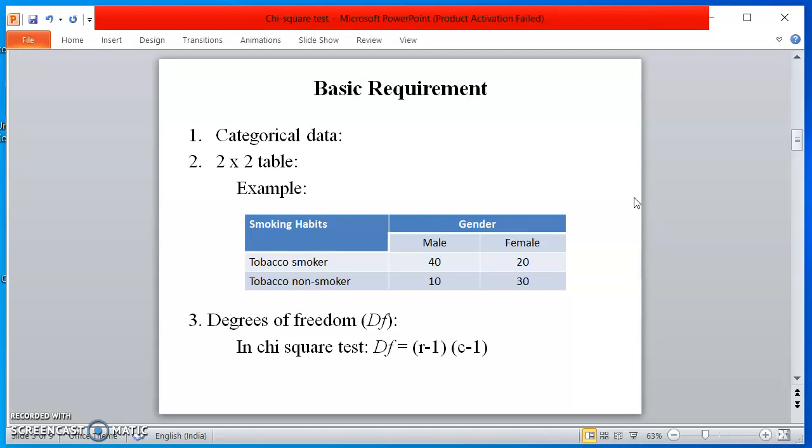The third important step is degrees of freedom, which is known as DF. Degrees of freedom are the number of independent values that a statistical analysis can estimate. It is an essential idea that appears in many contexts throughout statistics, including hypothesis testing, probability distribution, and regression analysis.